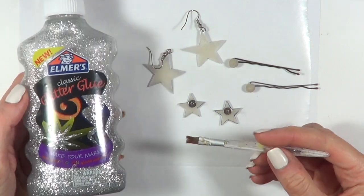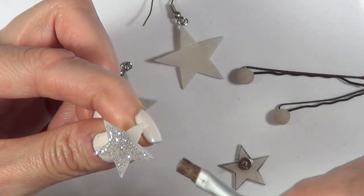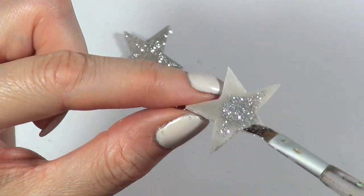Once everything is dry, I'm going to be taking some glitter glue, the silver one, and I'm just going to paint the whole thing. It's pretty easy and I'm just going to be giving them a few coats until they're opaque enough.